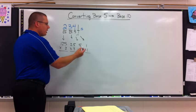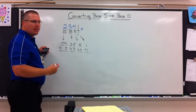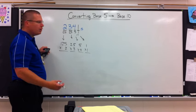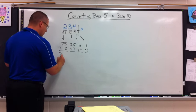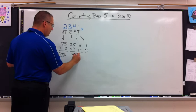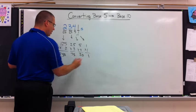The reason I put place values on top is that way I can double check, because often times kids will miss a place value. So I can check, 125, 25, 5, and 1, yes. Multiply it, 250, 75, 20, and 1.